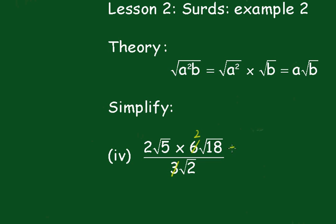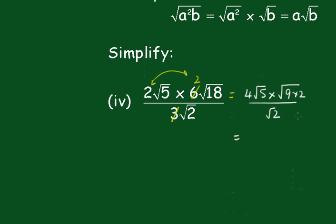And then we rewrite that as 2 times the square root of 2 times the square root of 5 times the square root of 9 times 2. So we change the square root of 9 times the square root of 9 times the square root of 2 times the square root of 10.